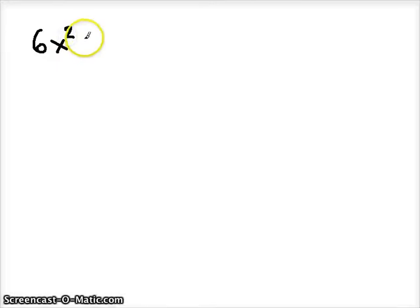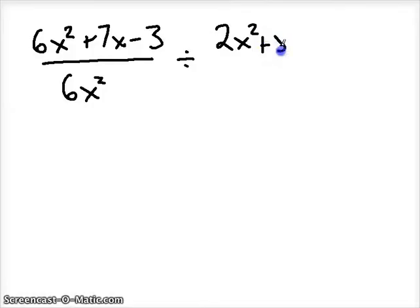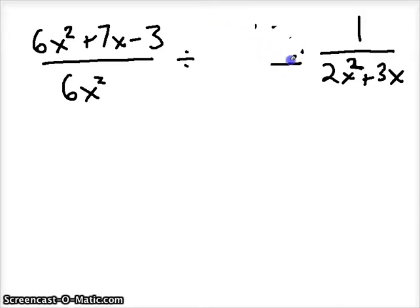Let's do another. So just like a whole number always has a denominator of 1, a polynomial always can be written over 1, if there isn't already a denominator there. So now what we've got to do is change this to multiplication and flip. So now we're going to have 1 on top, 2x squared plus 3x on the bottom.